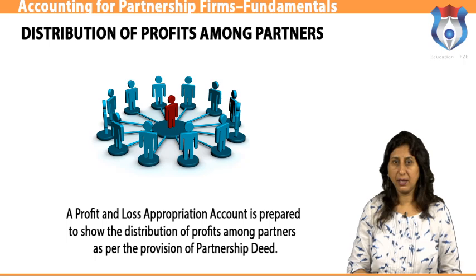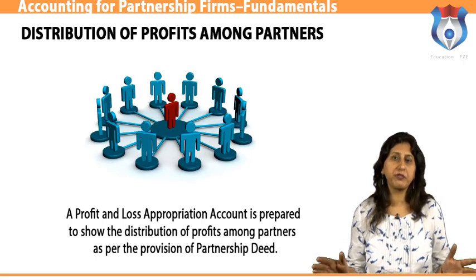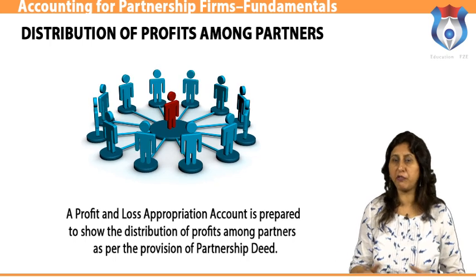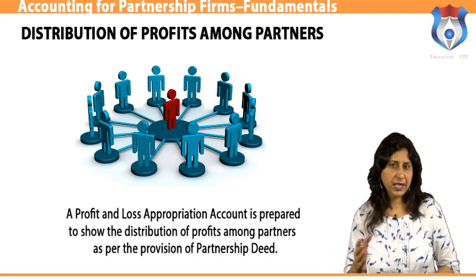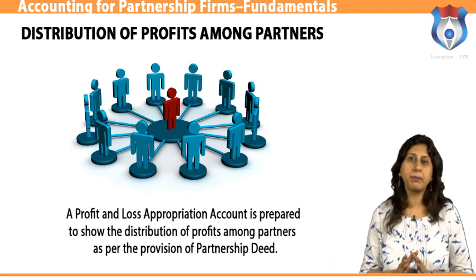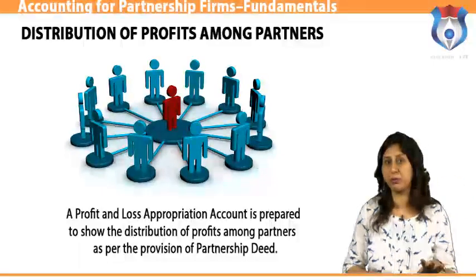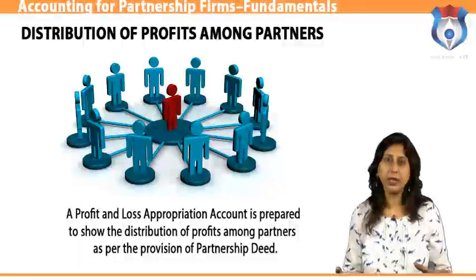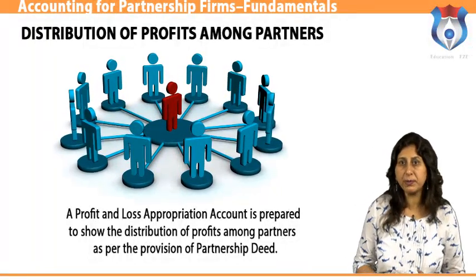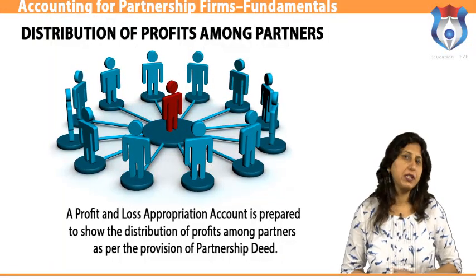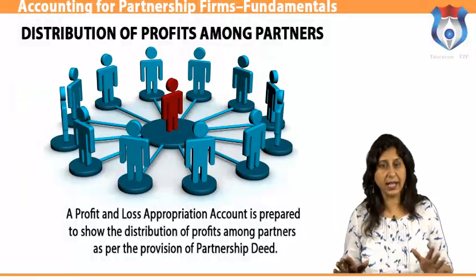Distribution of profits among partners: a profit and loss appropriation account is prepared to show the distribution of profits among partners as per the provisions of the partnership deed. It is an extension of the profit and loss account and is a nominal account. It shows the distribution of profit in the form of salary, interest on capital, commission, and distributable profit to each partner.